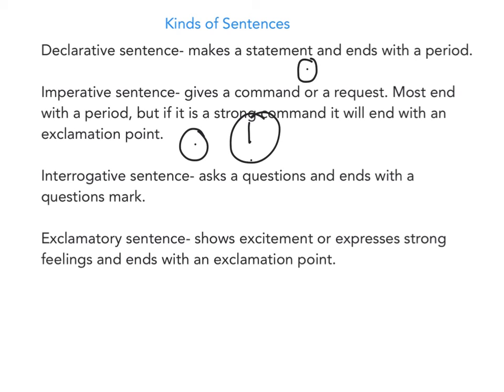An interrogative sentence asks a question and ends with a question mark — it can never end with anything else. For example: 'Did she say anything to him?' — question mark. An exclamatory sentence shows excitement or expresses strong feelings and ends with an exclamation point — it can never end with anything else.